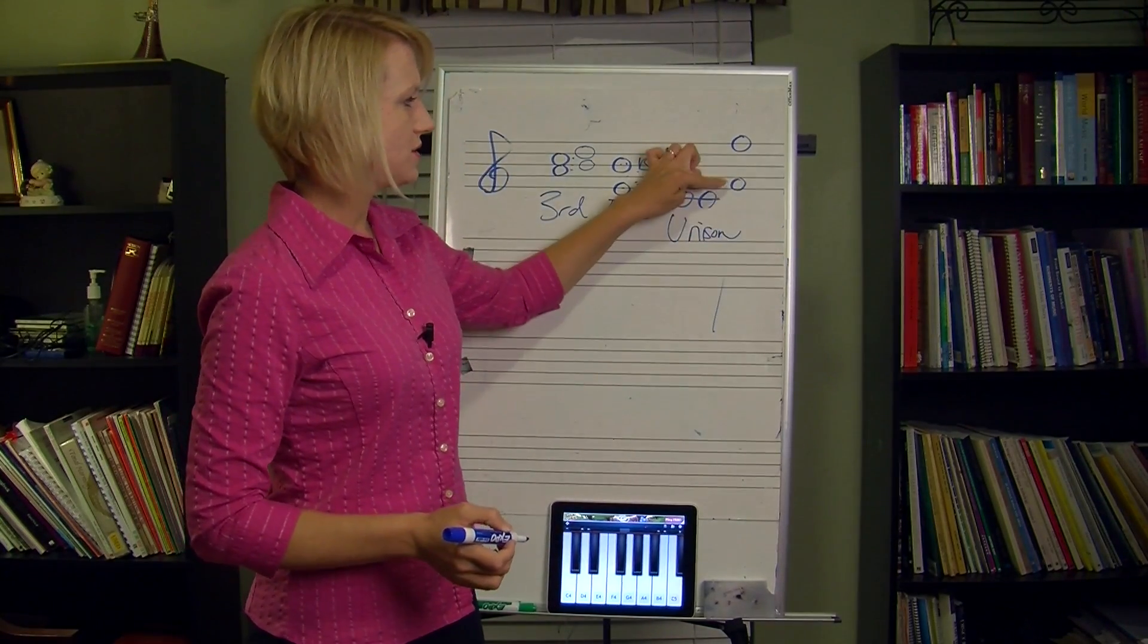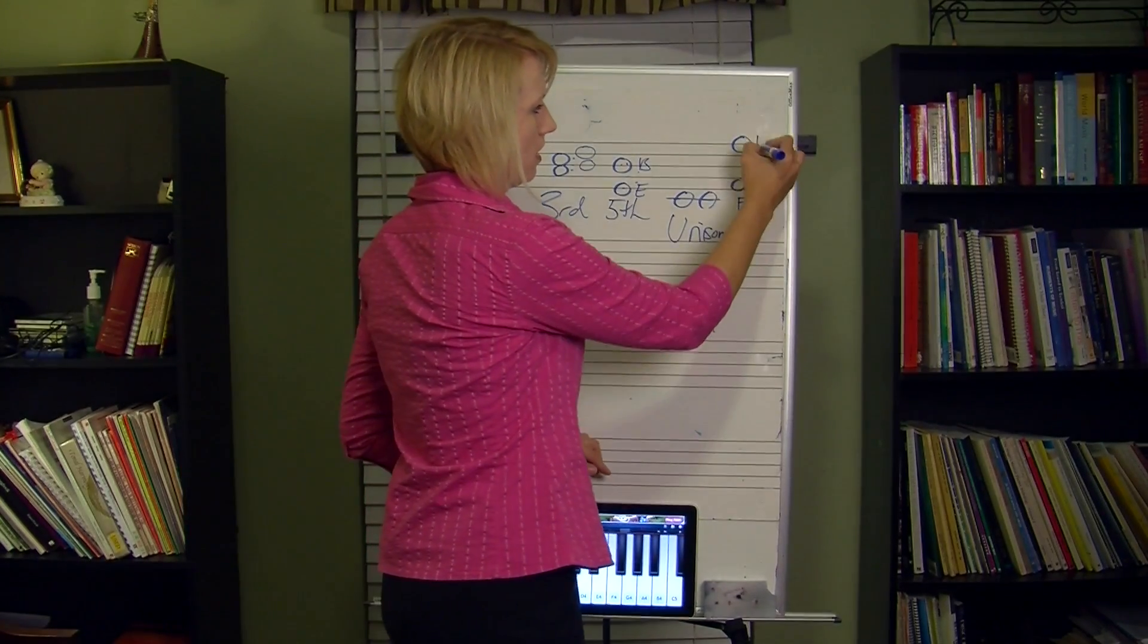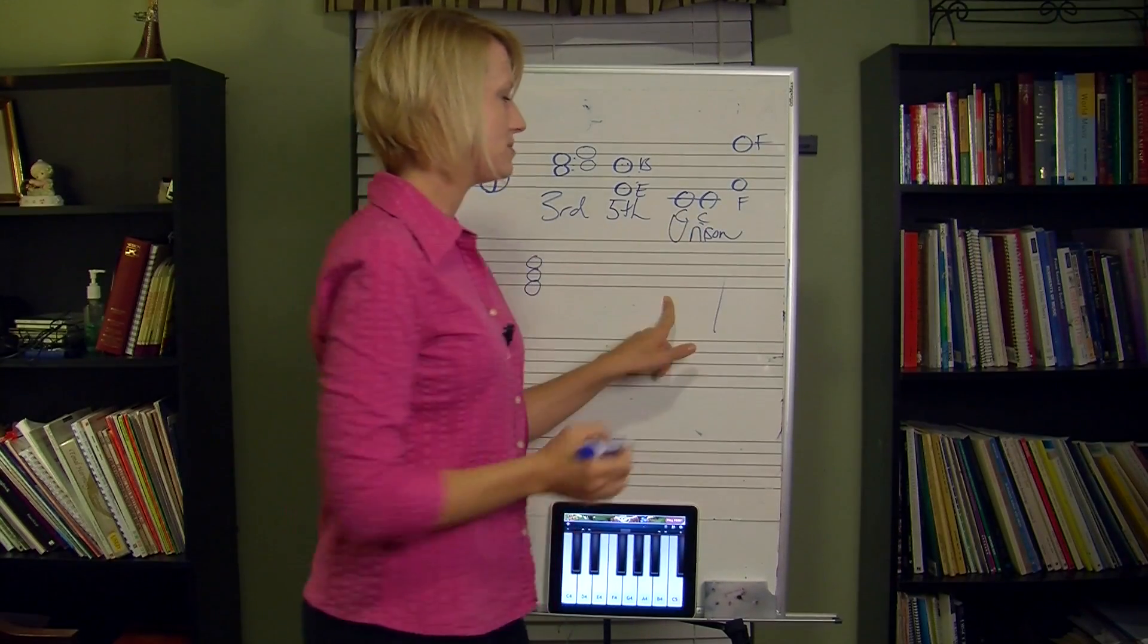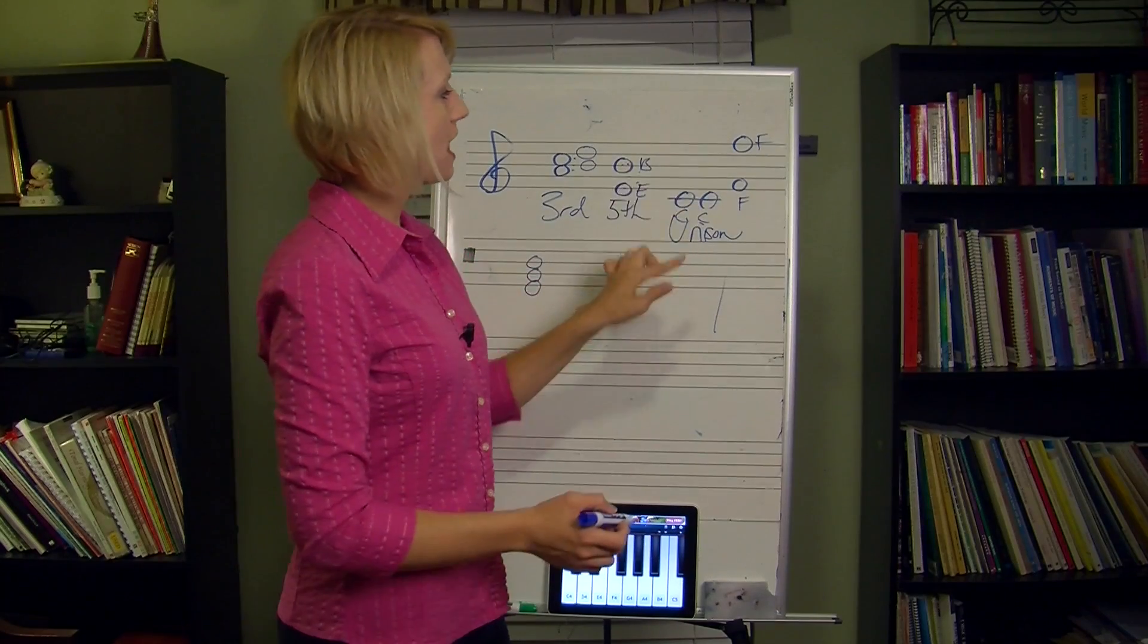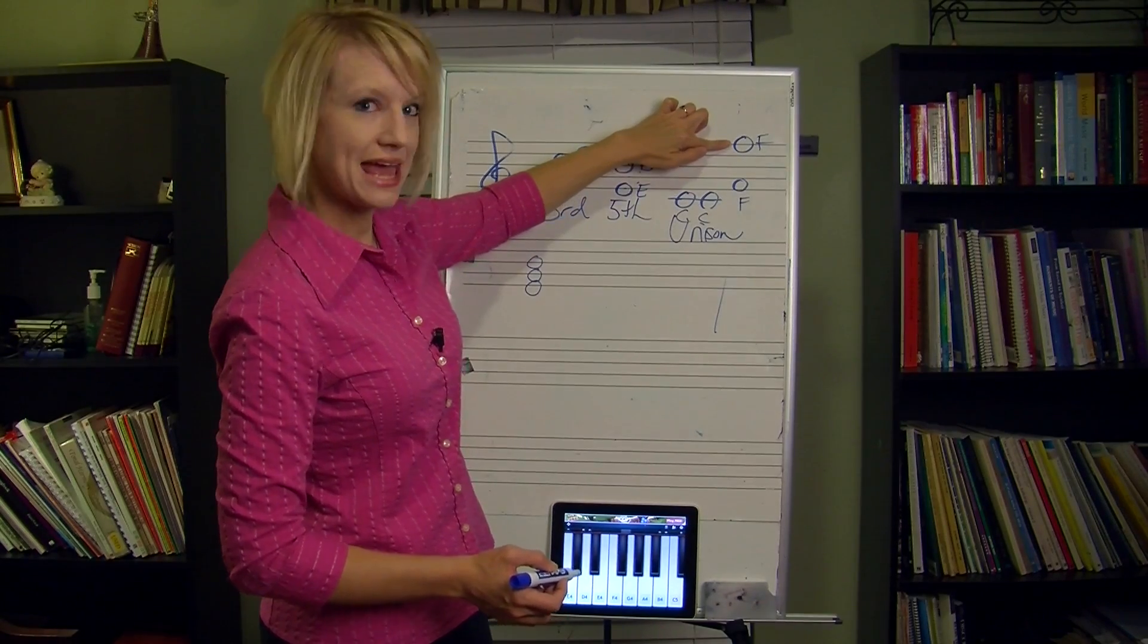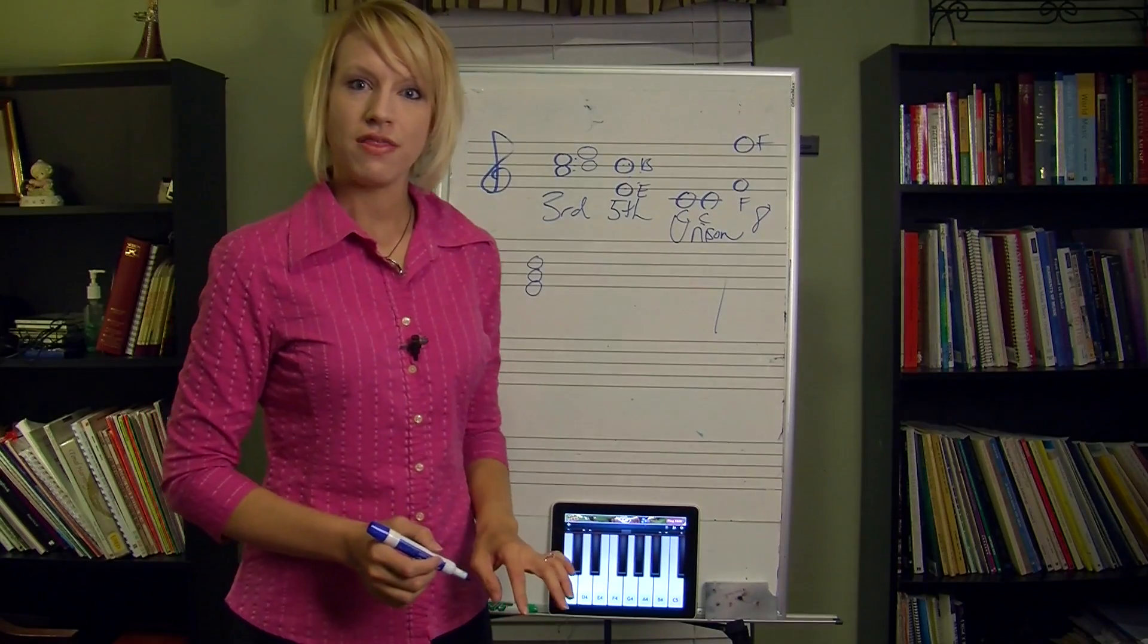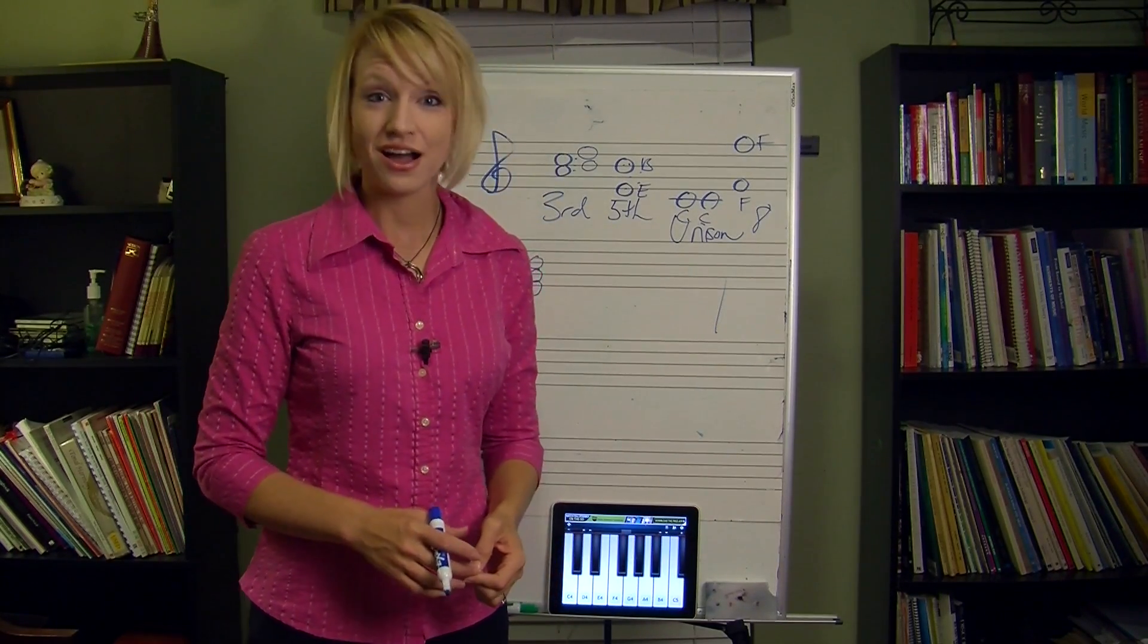The next one, this goes from F to F. So it's not the exact same pitch like this one was C, the exact same C. It's F to the next F up. Let's count it. So we have one, two, three, four, five, six, seven, eight. We're also going to call that an, anybody remember from a long time ago? An octave.